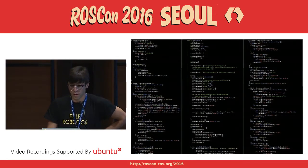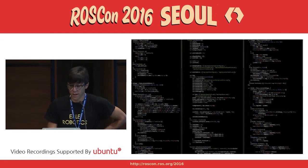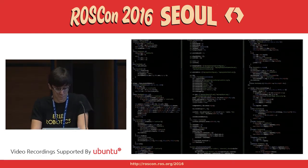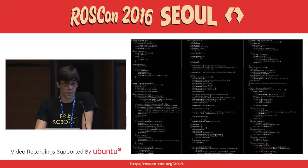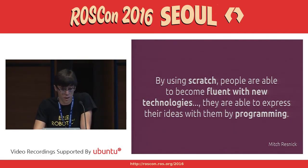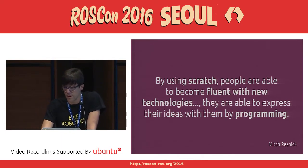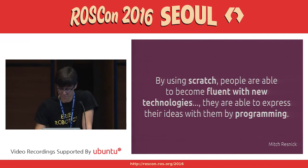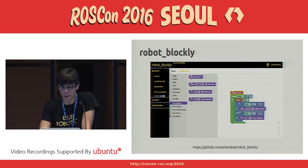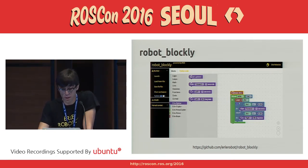People normally think coding is like complex mathematics, and if that were the case, it would only be a narrow community of people with special mathematical skills and technological background who could code. But we need to engage new people in programming and in programming robots. By using Scratch — or in this case Robot Blockly — people are able to become fluent with new technologies and express their ideas by programming. For this reason we have created Robot Blockly, a ROS package that allows users to create ROS-based algorithms and behaviors, abstracting its complexity using blocks.